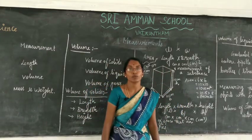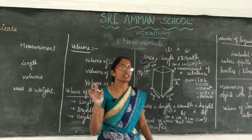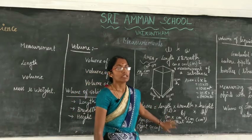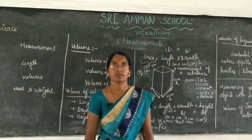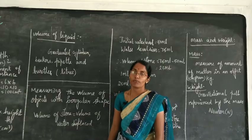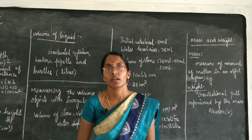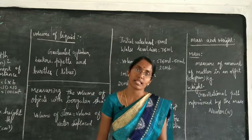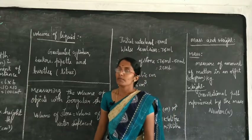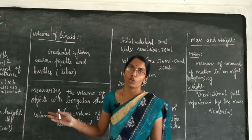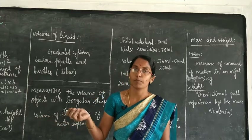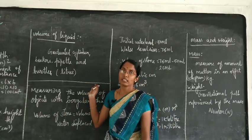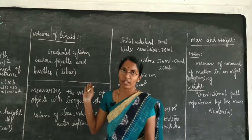We can find the volume of a solid with the help of length, breadth, and height. Now we discuss the volume of liquid. We can find the volume of liquid with the help of a container, since liquid occupies the shape of the container. For solid, we need length, breadth, and height, but for liquid we need a container.